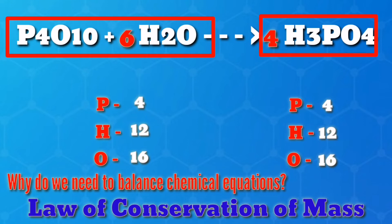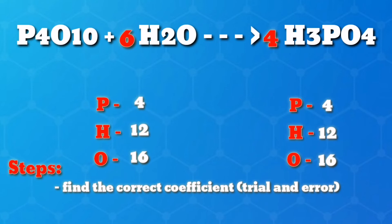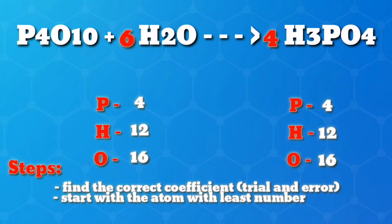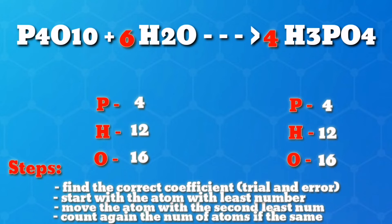But how do we go about balancing these equations? We know that the number of atoms of each element needs to be the same on both sides of the equation, so it is just a matter of finding the correct coefficients to make that happen. It is best to start with the atom that shows up the least number of times on one side and balance that first. Then move on to the atom that shows up the second least number of times, and so on. At the end, make sure to count the number of atoms of each element on each side again, just to be sure.